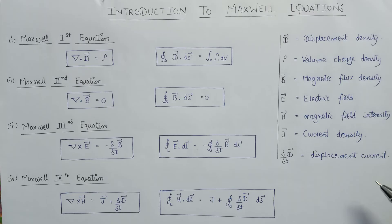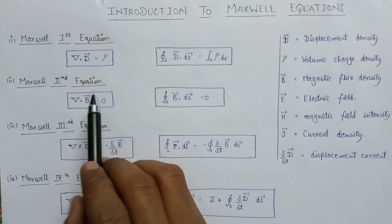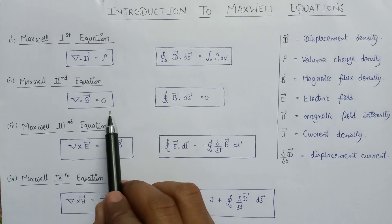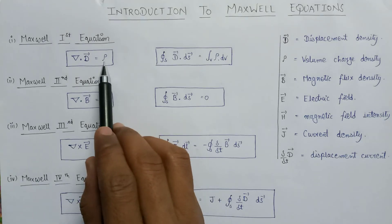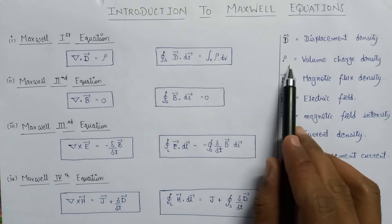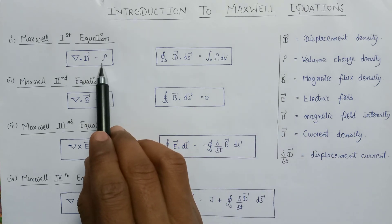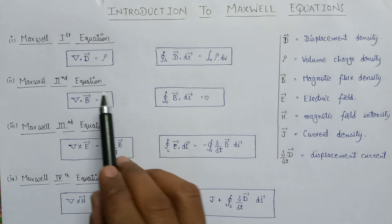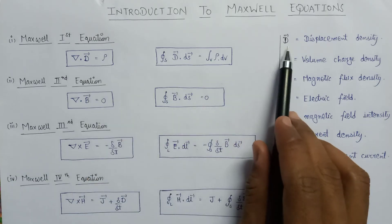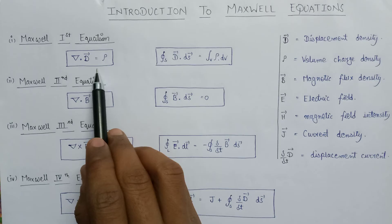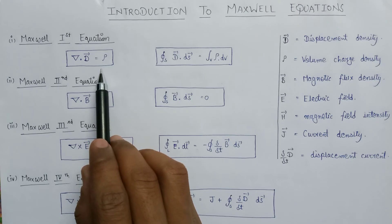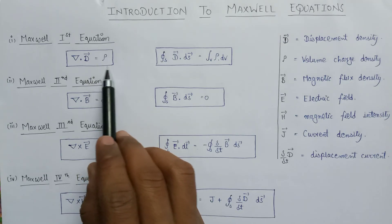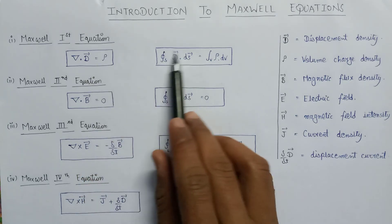Let us discuss Maxwell's 1st equation. According to the Maxwell 1st equation, the volume charge density is equal to the divergence of displacement density. So Rho is equal to the divergence of D. This is the differential form or point form of Maxwell's 1st equation. And this is the Maxwell 1st equation in integral form.